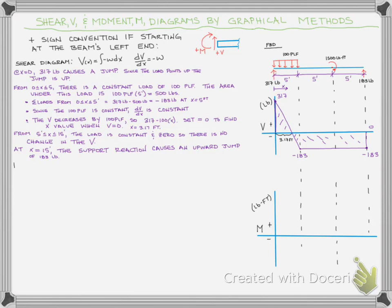Now we want to use this shear diagram to get us to our moment diagram. We know that the moment is simply equal to the integral of the shear — the area under the shear diagram. As I look at that shear diagram, I see a positive triangle, a negative triangle, and a large negative rectangle. And I can find the areas of triangles and rectangles.